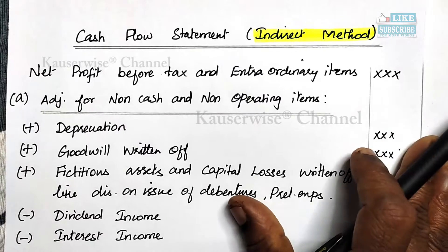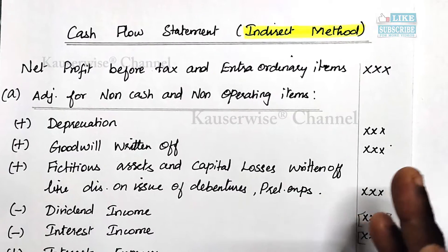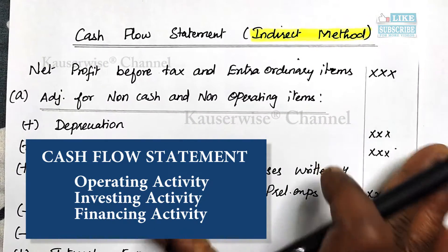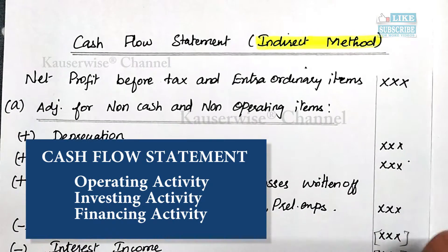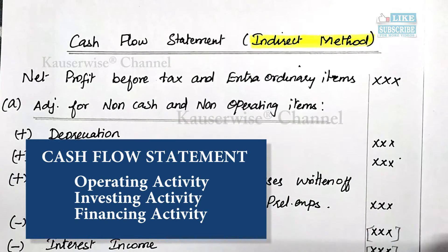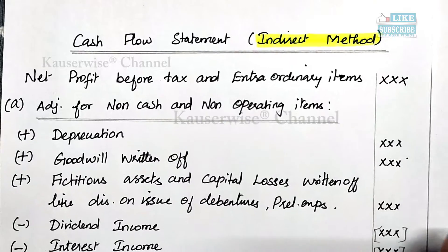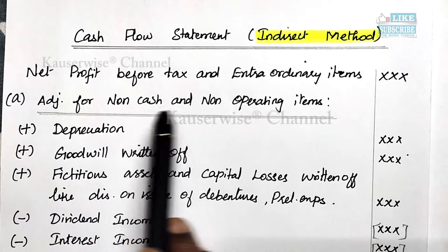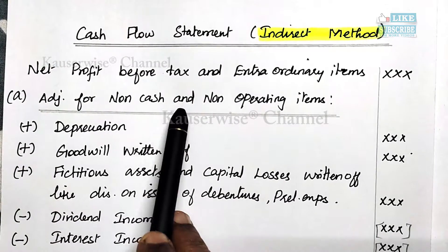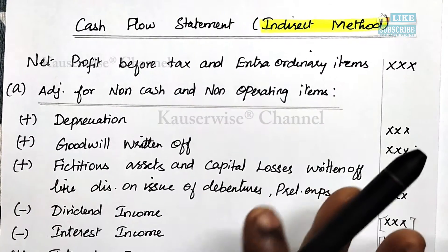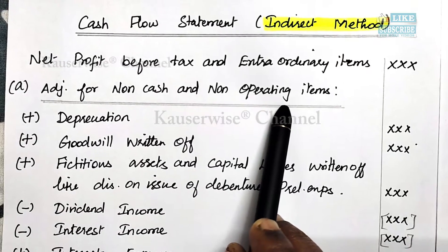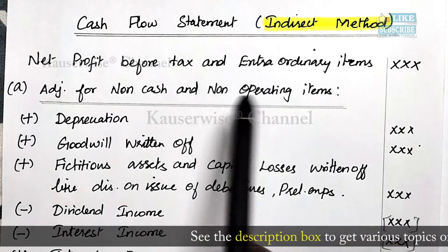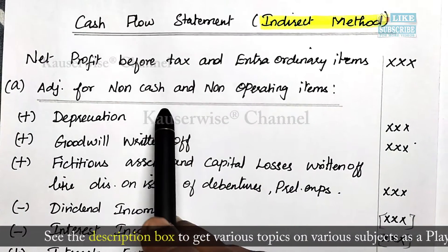After finding this calculation, you have to do 3 important adjustments to find the cash from operating activities. The first adjustment is adjustment for non-cash and non-operating items. Non-cash means transactions which are not going to increase or decrease cash. Non-operating means certain transactions not directly related to the operating activities of the organization. I will tell you what the various non-cash and non-operating items are.